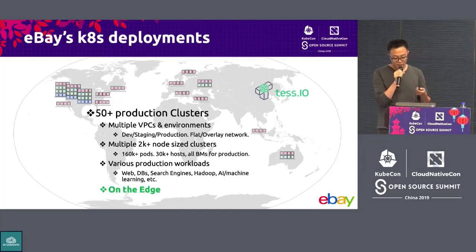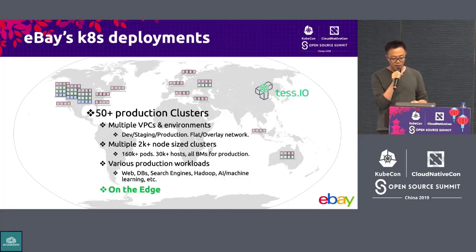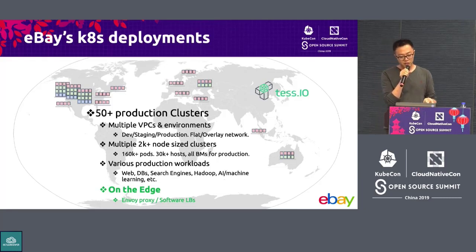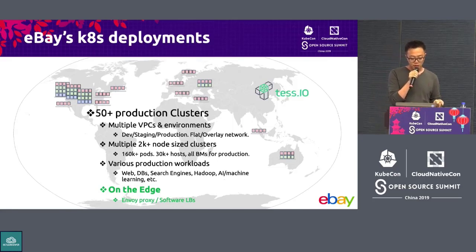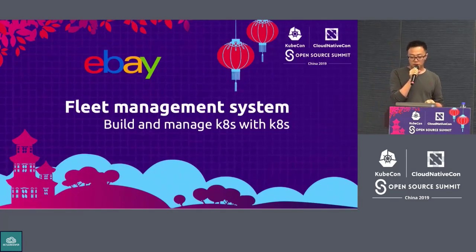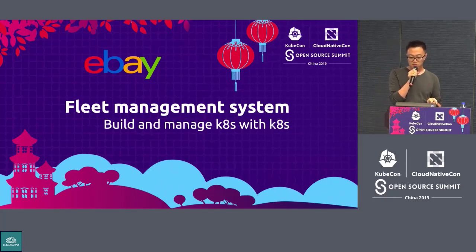We are also running on the edge. We have around 15 edge clusters across the world, and we are running our Envoy edge proxies as well as software load balancers on top of Kubernetes there, where we do a lot of SSL termination and web caching to accelerate remote eBay users' experience. We are rapidly growing our footprint on the edge. Our ultimate goal is to unify our fleet with Kubernetes, and we use Kubernetes to make it all happen — that is our fleet management system to build and manage eBay's private cloud that runs Kubernetes with Kubernetes.